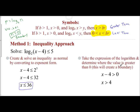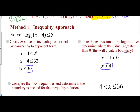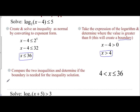Now I'm going to focus on the boundary. The boundary comes from the definition of logarithms: what you're taking the log of has to be greater than 0. So I take x minus 4, set it greater than 0, and get x is greater than 4. From here I'm going to compare the two inequalities and determine if the boundary is needed for the solution, by applying it to an inequality graph on a number line.